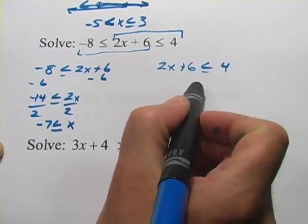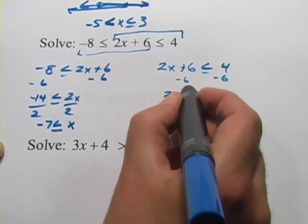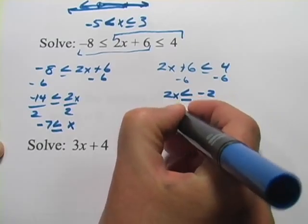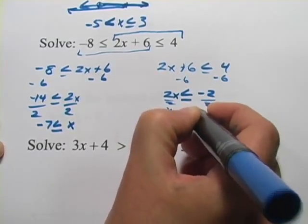And over here, let's see, I'm going to subtract 6 again and I get 2x is less than or equal to negative 2. And I divide by 2 and I get x is less than or equal to negative 1.